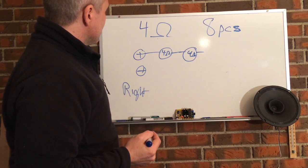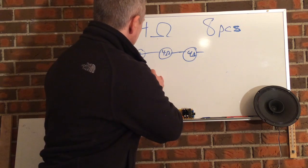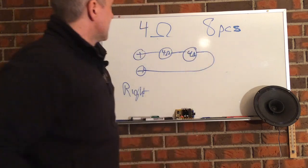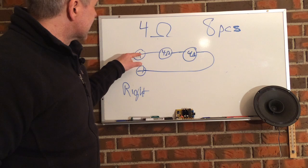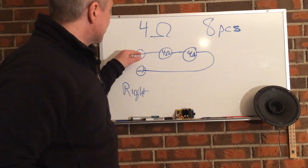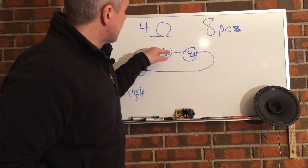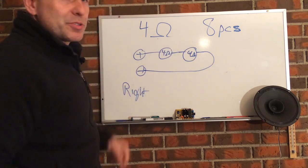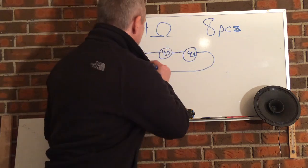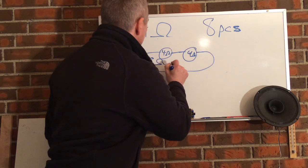And then you connect these two. So now what happens is that it gets harder for the power to get through it. So it goes four ohms and then it has to go through another four ohms before it goes to minus. So this circuit creates eight ohms.